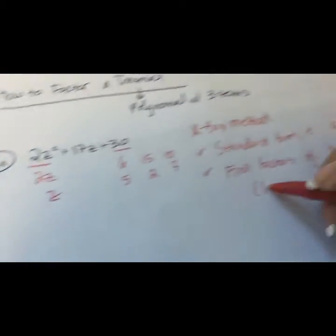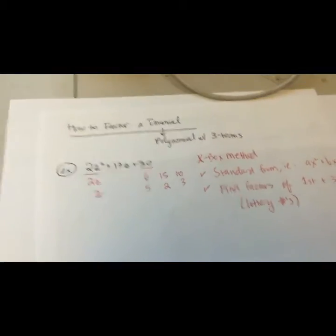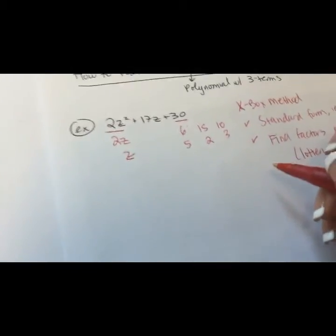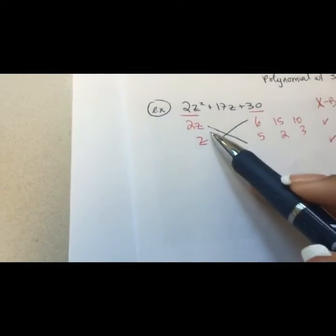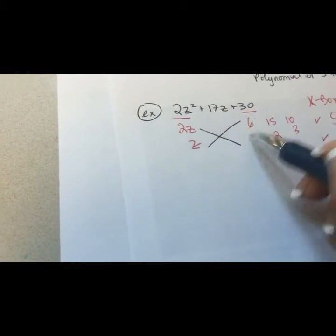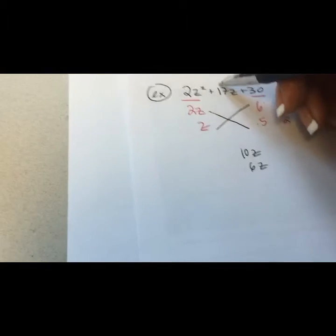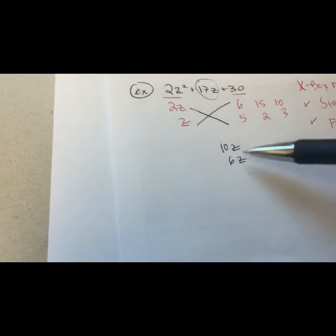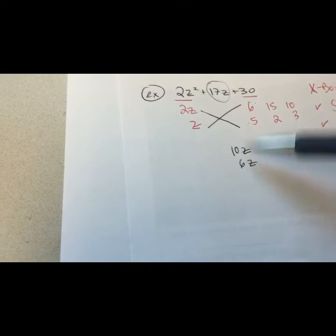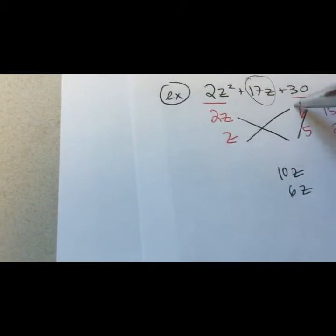These factors are what I call my lottery numbers, and only one pair will win. To find out which one wins, I do what I call the X. I draw my X and cross-multiply: 2z times 5 gives me 10z, and z times 6 gives me 6z. I ask myself: can I add or subtract any of these to give me 17z? The answer is no, so these lottery numbers lose.